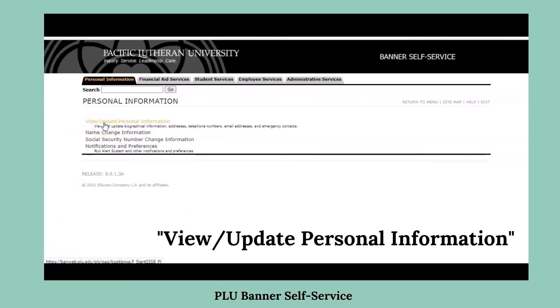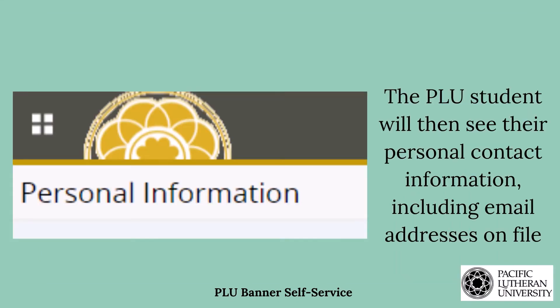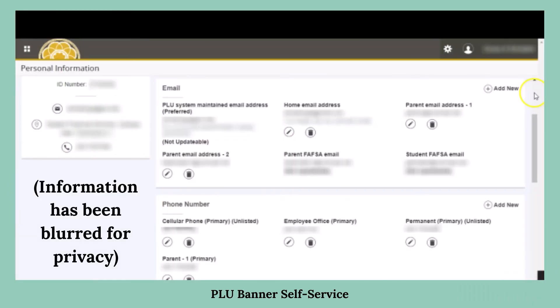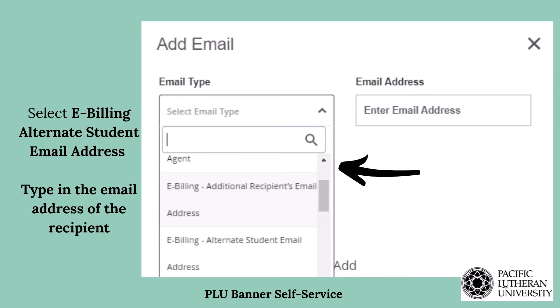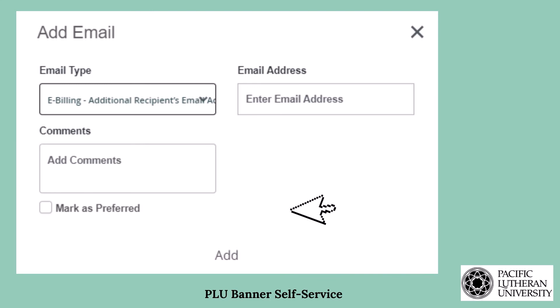This will bring you to a page where you can view your personal information on file with the University. This includes your address, email, phone numbers, emergency contact, among other information. Scroll to the email section and add a new email. Select the e-billing email type, type in the additional email, and select Add. When the next billing statement is sent out, it should be sent to the recipients you indicated in Banner Self-Service by taking these steps.